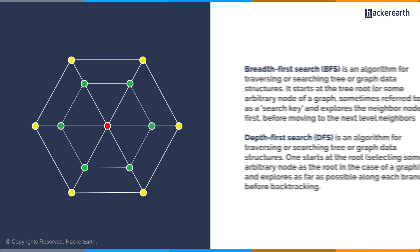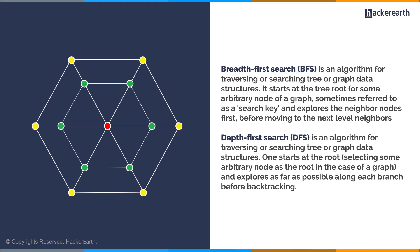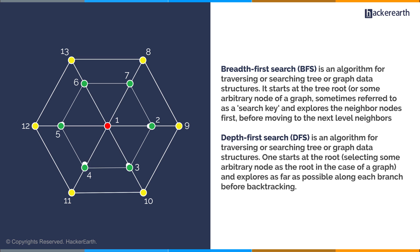Depth first search (DFS) and breadth first search (BFS) are algorithms — in simple terms, methods to traverse a graph. Consider a graph with 13 nodes. When breadth first search is applied, the algorithm traverses from node 1 to node 2, then to nodes 3, 4, 5, and 6, and so on. BFS gradually moves outward, considering each neighboring node first. The accepted definition: BFS is an algorithm for traversing or searching tree or graph data structures. It starts at the root or some arbitrary node and explores neighbor nodes first before moving to the next level of neighbors.